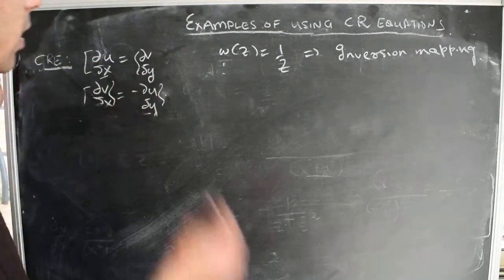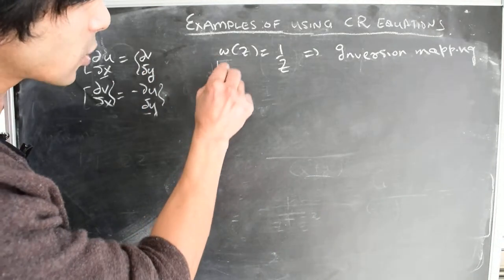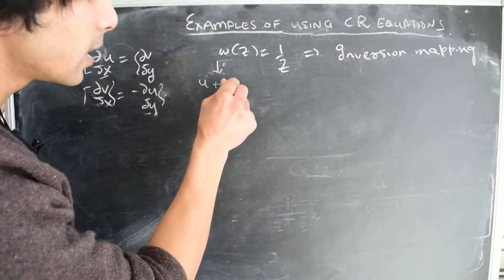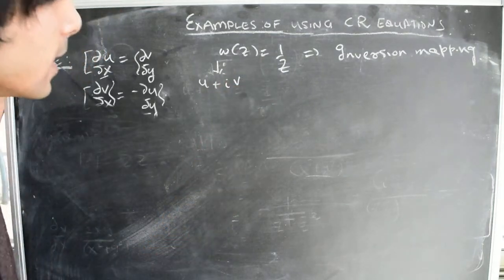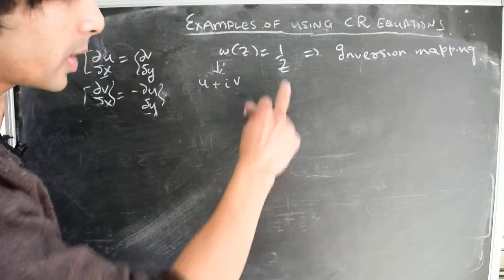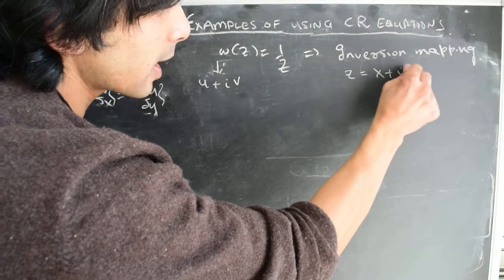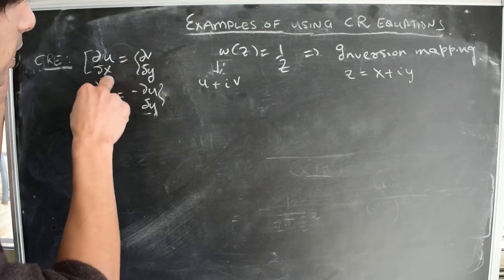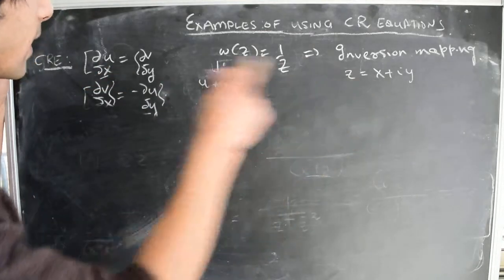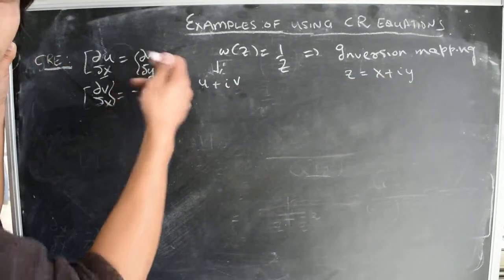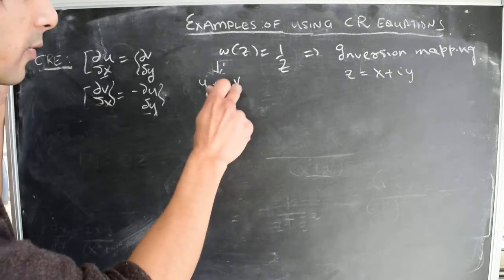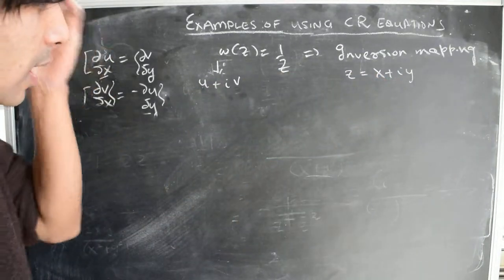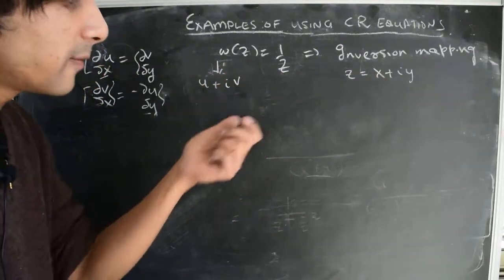The Cauchy-Riemann equations are constraint equations. Given a complex function W(Z), we write W = U + iV where U and V are the real and imaginary parts, both functions of X and Y, with Z = X + iY. The Cauchy-Riemann equations require us to check whether ∂U/∂X = ∂V/∂Y and simultaneously ∂V/∂X = -∂U/∂Y. The first step is to find U and V as functions of X and Y.